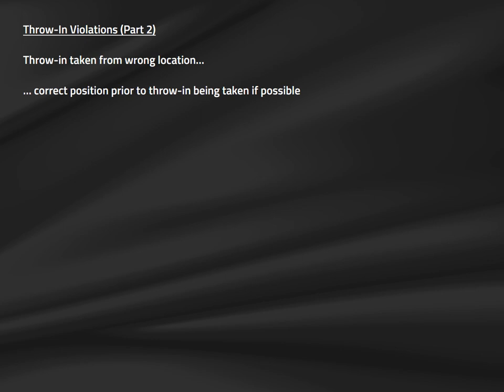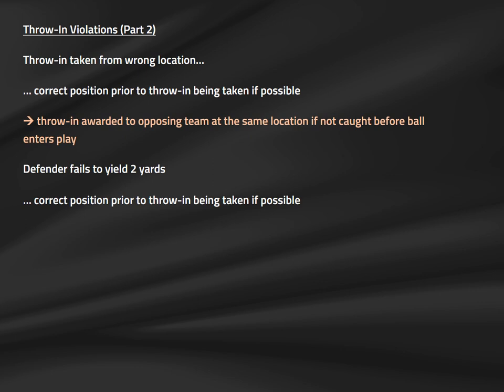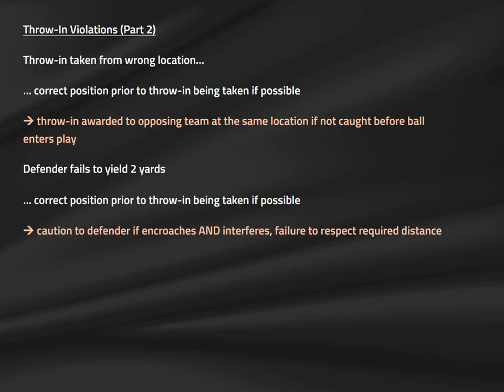The idea is not to play gotcha, but to correct the position and allow the restart to occur normally. If there is a gross violation or one recognized after the ball is in play, stop play and grant a throw-in to the opposing team. If a defender fails to yield two yards, try to intervene and correct the position before the throw — this is a cautionable offense, but the idea is to intervene before pulling a card. Cautions are only administered when the defender actively interferes with the taking of the throw-in.